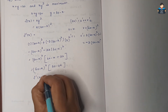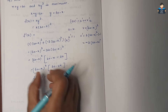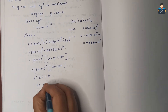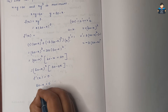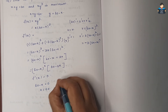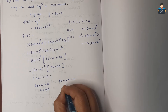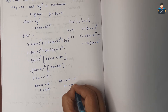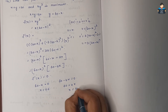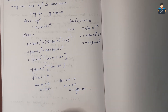Setting f'(x) = 0: either 60 minus x = 0 giving x = 60, or 60 minus 4x = 0 giving 60 = 4x, so x = 60/4 = 15.